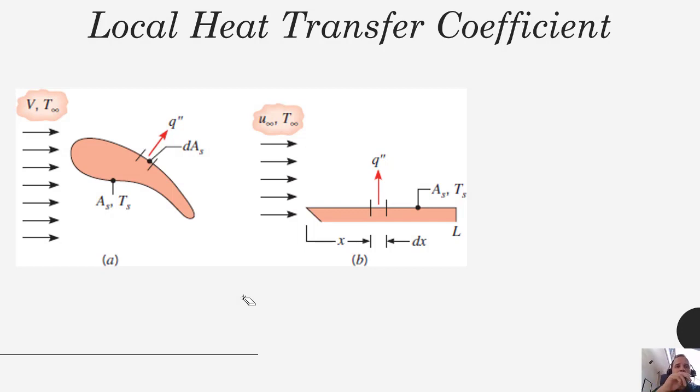So that brings us to this topic of the local heat transfer coefficient. Rather than having a solid with this uniform H all the way around, really what happens is you may have a local heat transfer coefficient here. Your heat transfer coefficient may be different here than here. And so what we really have to do is integrate over the entire solid to get the total effect, the total flow of heat or the average heat transfer coefficient.